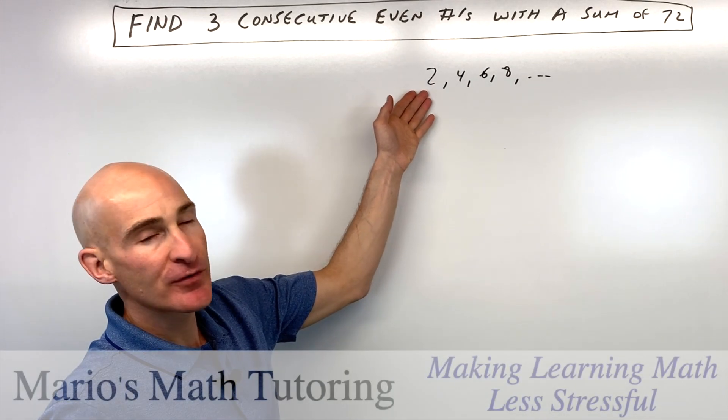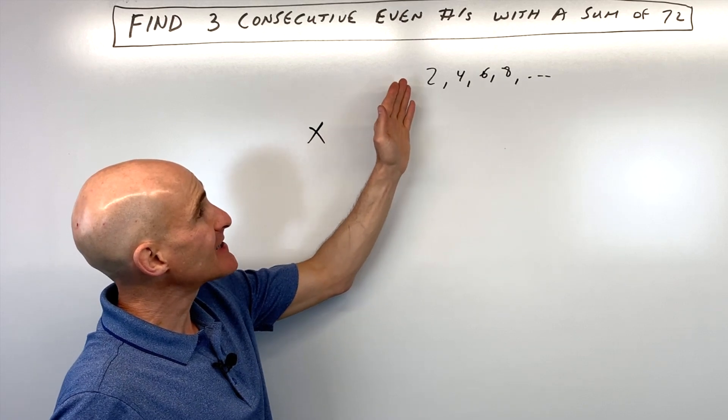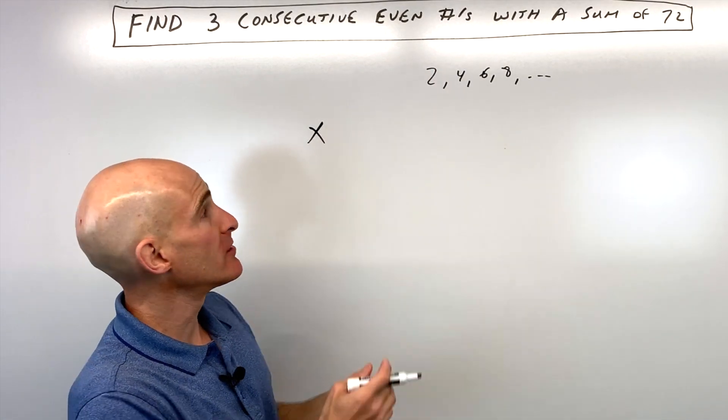But say, for example, if the first number, let's just call it x, we don't know exactly what it is.